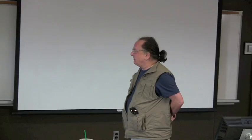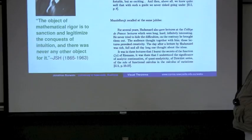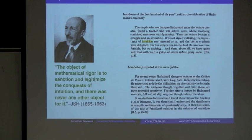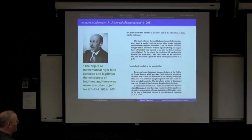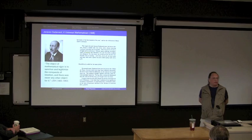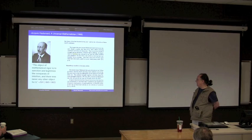Let's start with a quote from Hadamard. In a marvelous book that came out about 20 years ago, the object of mathematical rigor is to sanction and legitimate the consequences of intuition and there was never any other object for it. You could argue that if we had never run into problems with informal mathematics there would be no need for rigor.